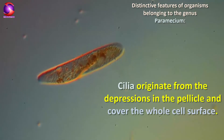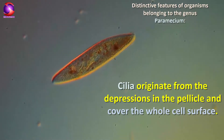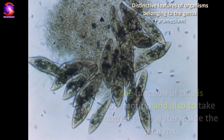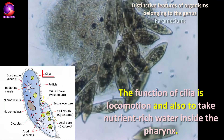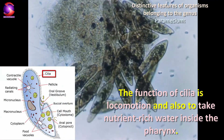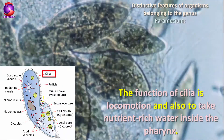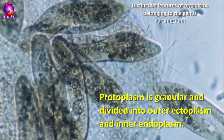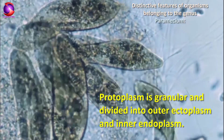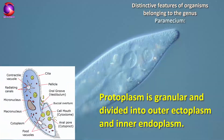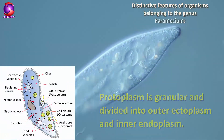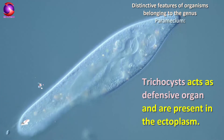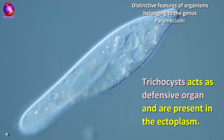Cilia originate from the depressions in the pellicle and cover the whole cell surface. The function of cilia is for locomotion and also to take nutrient-rich water inside the pharynx. Protoplasm is granular and divided into outer ectoplasm and inner endoplasm. Trichocysts act as a defensive organ and are present in the ectoplasm.